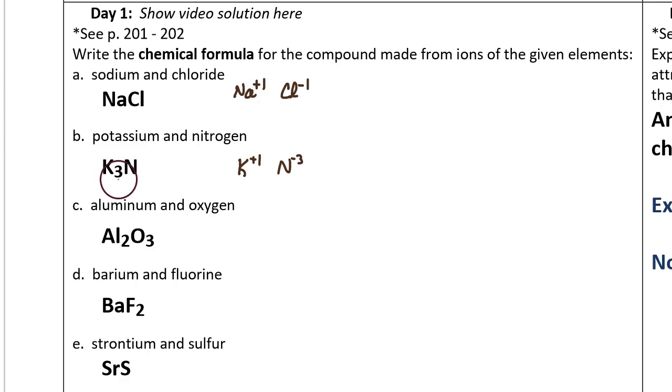And that's shown by putting a subscript of three after the capital K, K3N. Question C: Aluminum and oxygen. The formula is Al2O3. Here's the reason why.